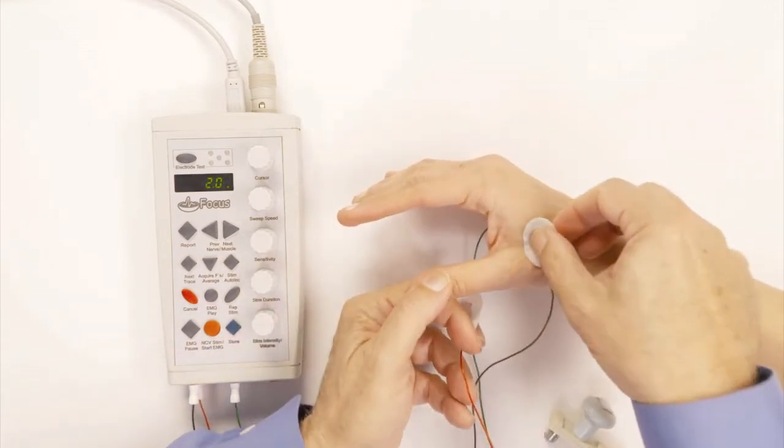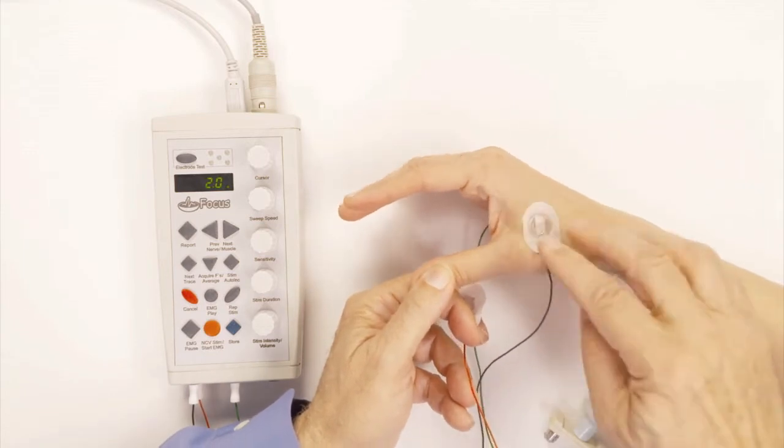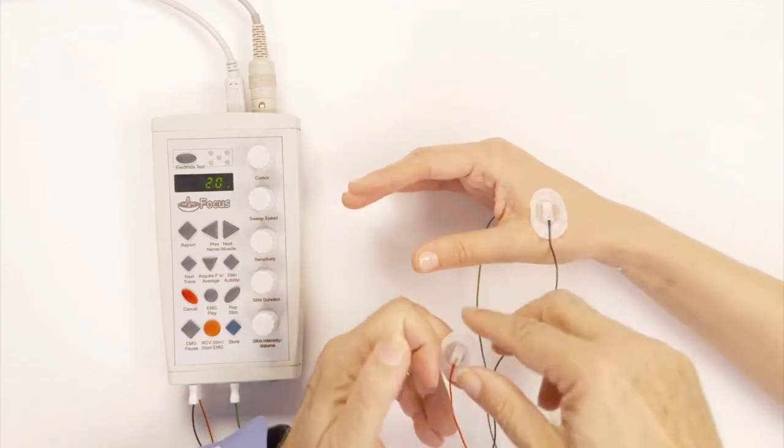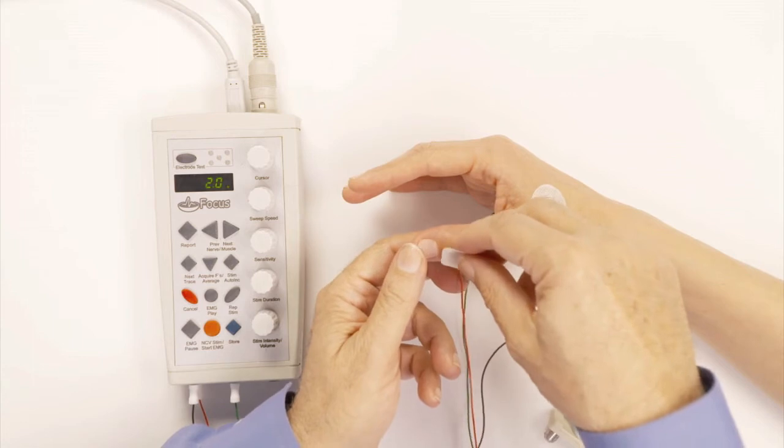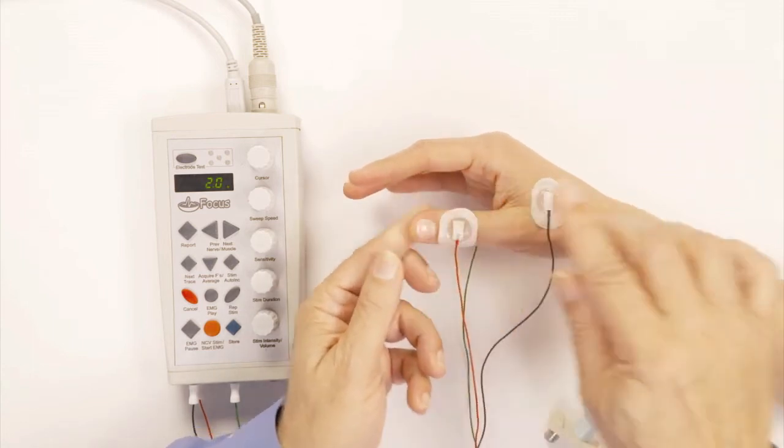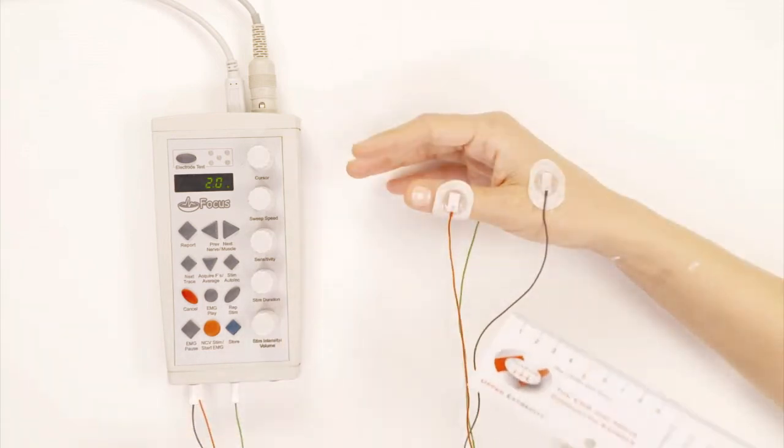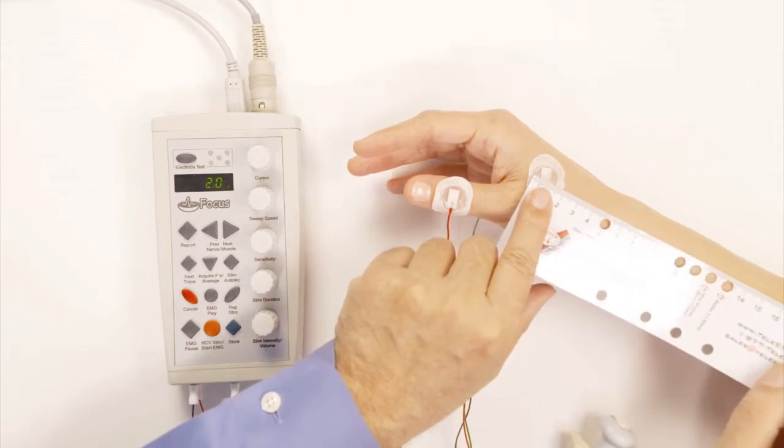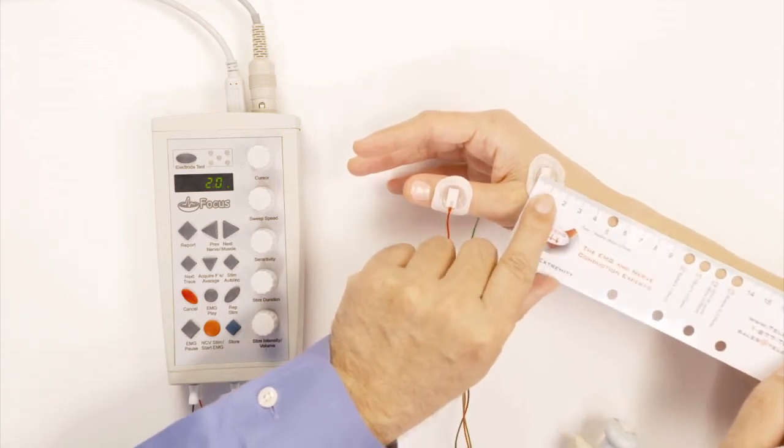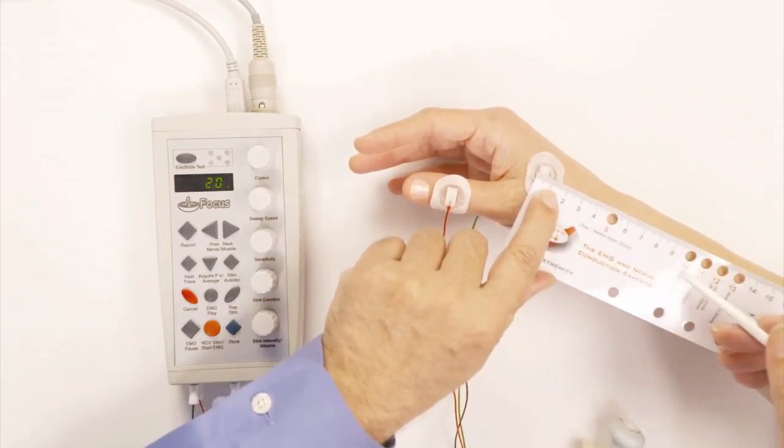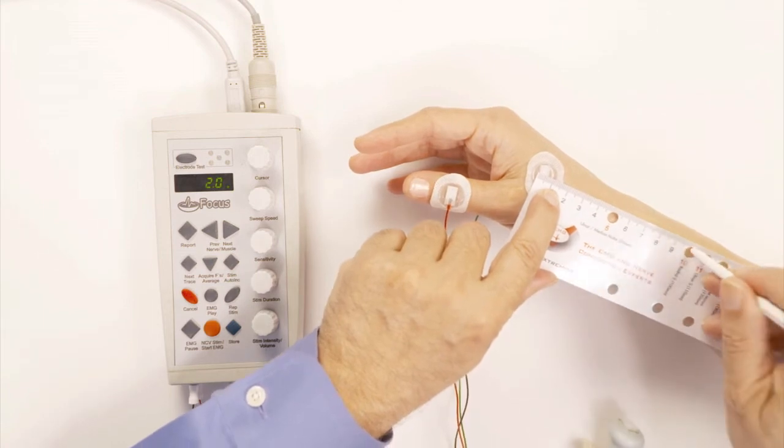Again, this is between the thumb and index fingers, and I will put the reference electrode here. Now I take the ruler to measure for the radial sensory, and I put it right here. You will see where it says radial sensory, that's the 10 right here.